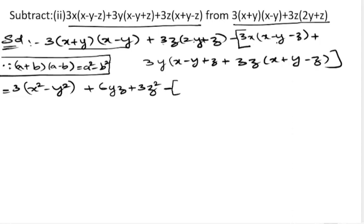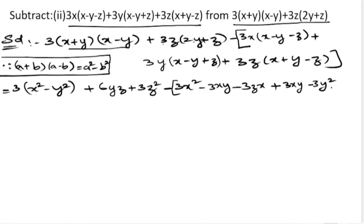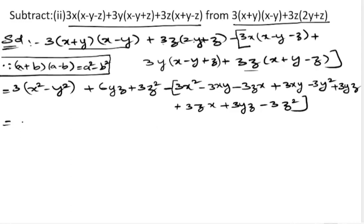Now open the inner brackets. 3x into x is 3x², plus into minus gives minus 3xy, minus into minus gives plus 3xz. Then 3y into x is 3xy. We also need a bracket for the next group. 3z into x is 3zx, plus 3yz. Finally 3z into x is 3zx, plus 3yz, minus 3x², minus 3z².